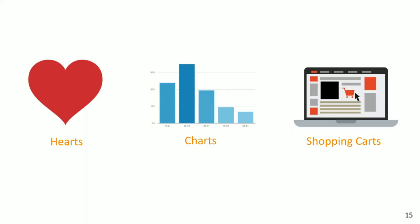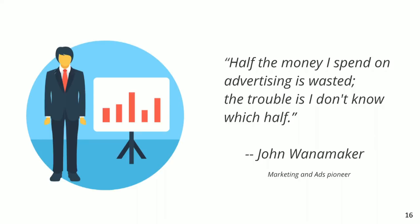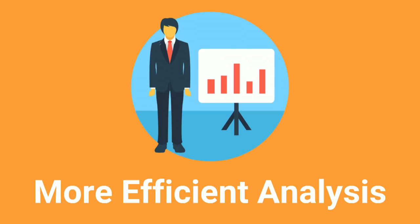I want to take a step back and talk about why we measure in the first place. In the old days, we knew we were spending money, but that's just about all we knew. We didn't know what type of advertising worked or what money was being wasted. There's a famous quote by John Wanamaker, who was the US Postmaster General and a marketing pioneer — he said he didn't know which half of his advertising was being wasted. With the ability to track, you should be able to know.